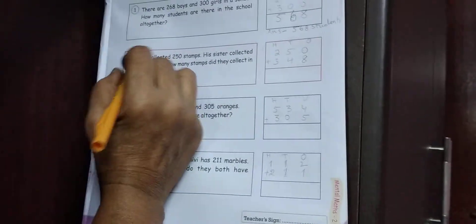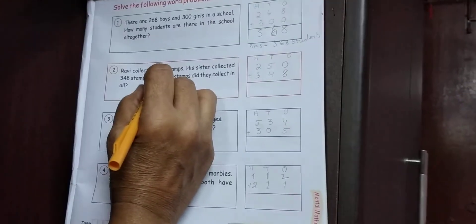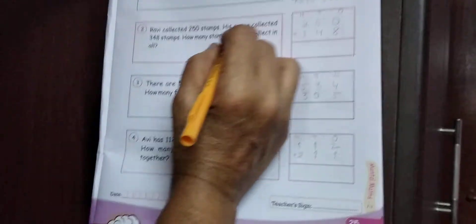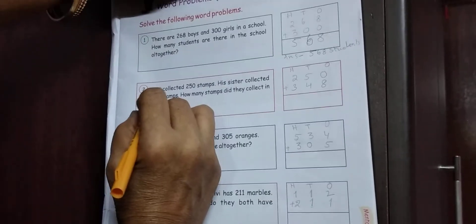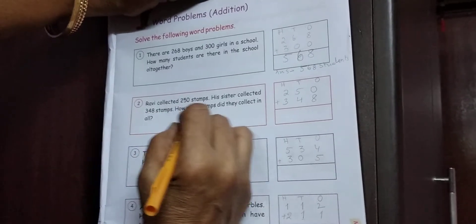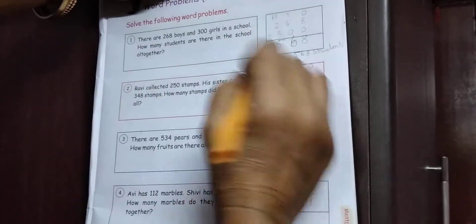Next, number 2. Robi collected 250, 250 stamps. His sister collected 348, 348 stamps. How many stamps did they collect in all?